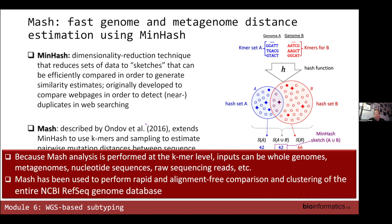The other thing that's kind of neat about MASH is that because you're using k-mers, you can input genome assemblies, metagenomic data, and just nucleotide sequences — raw sequencing reads — and you can munch it all.